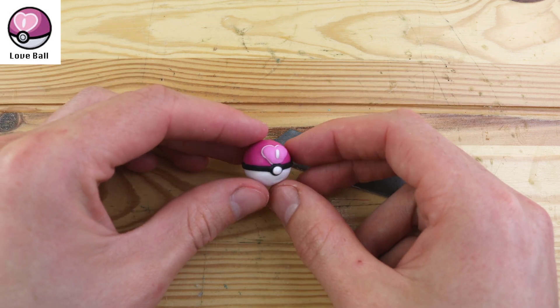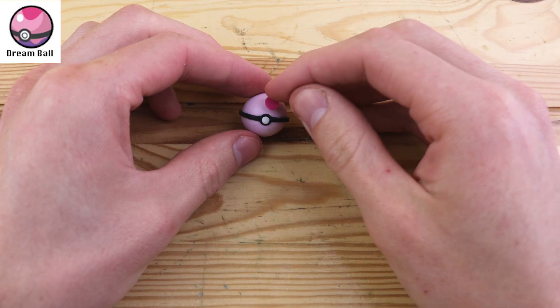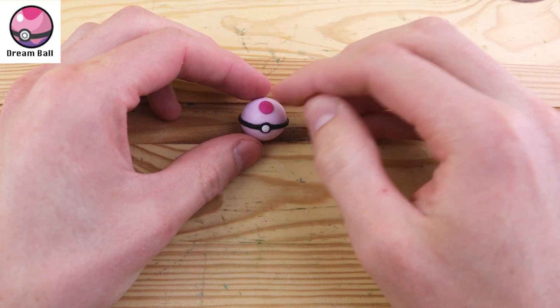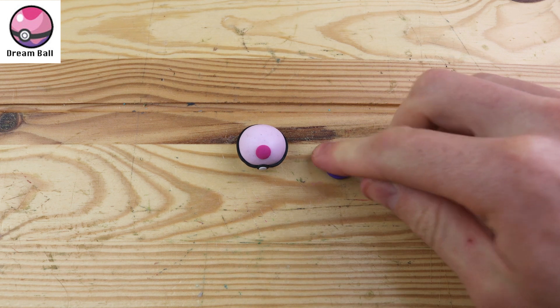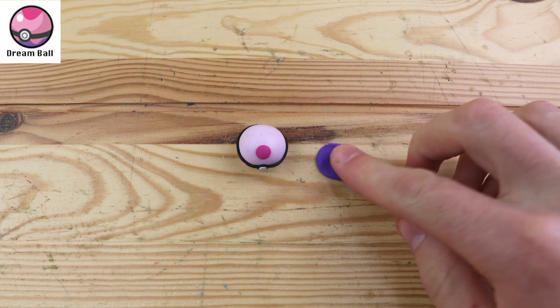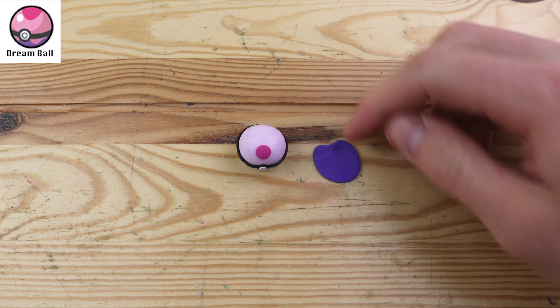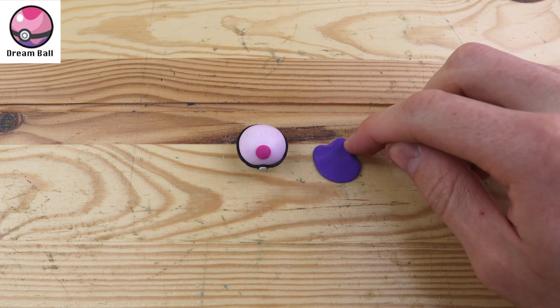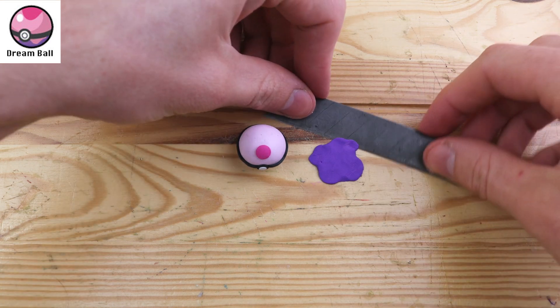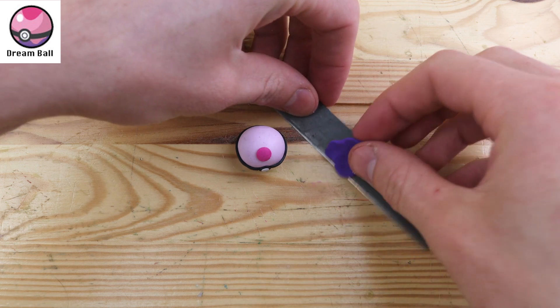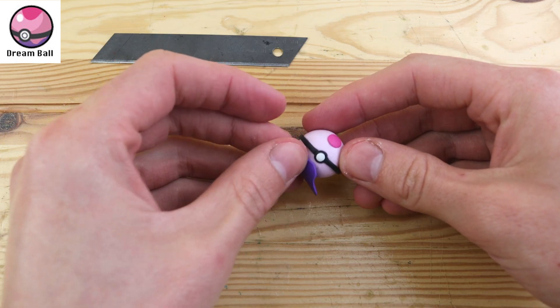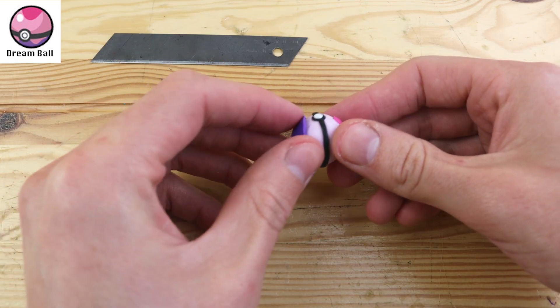And we can move on to our next Pokéball, the Dream Ball. It says it can be used to catch Pokémon in the Entry Forest, and I'm not sure what that is, but it also says it's more likely to succeed when used on a sleeping Pokémon. Very similar to the Dive Ball, we have this little splat on the bottom.